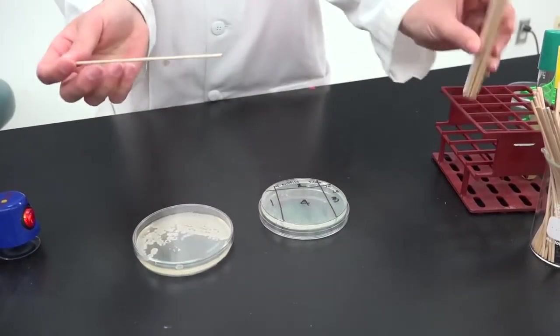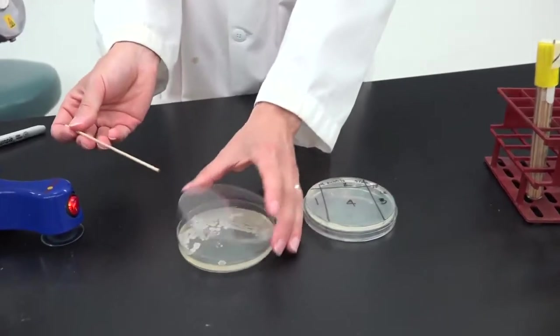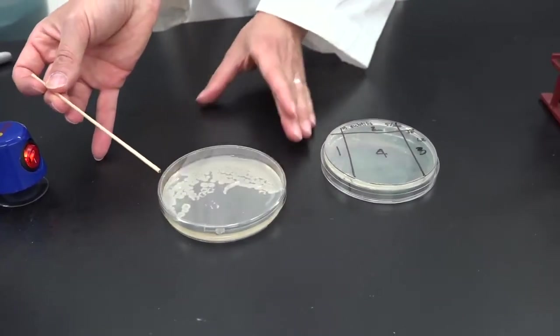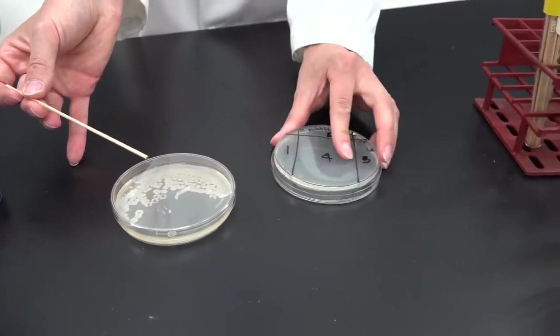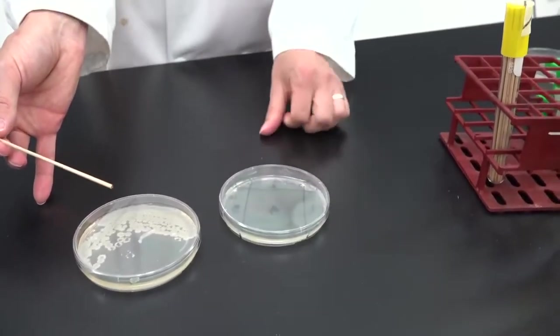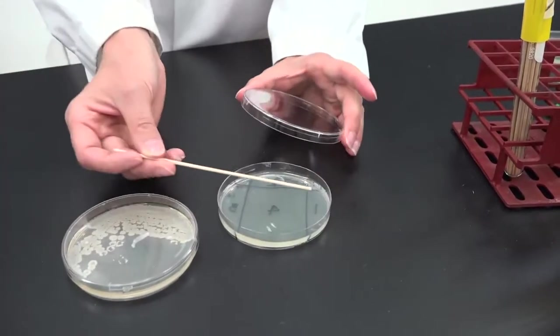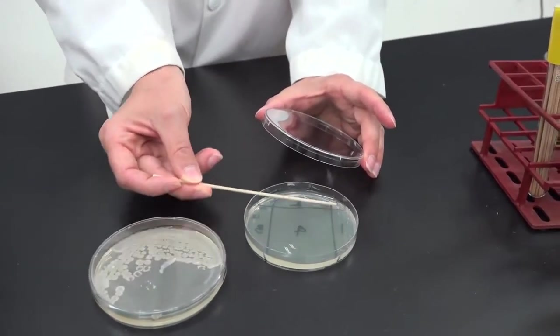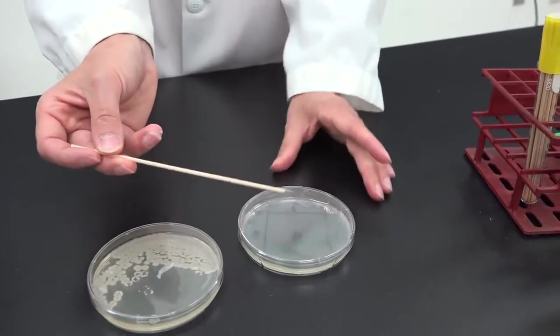Remove a sterile stick from the tube and then touch a single colony on the source plate. Turn over the plate that you're going to streak and in quadrant one, spread the bacteria evenly across the entire quadrant. When you are finished, discard that used stick.